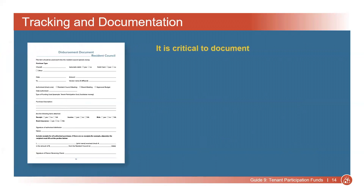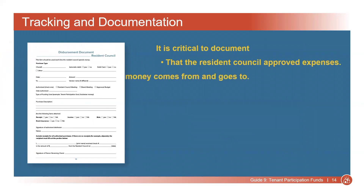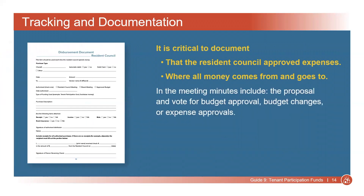It is critical to clearly document that the Resident Council approved expenses and where all money comes from and goes to. This information will be checked during an audit. To show that the budget or specific expenses were approved by the Resident Council, you will need to record meeting minutes, which include the proposal and a vote for budget approval, budget changes, or expense approval. The Treasurer should keep a copy of the minutes.